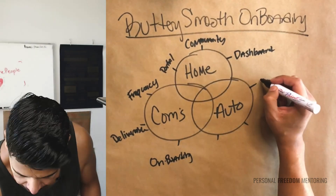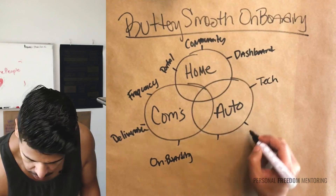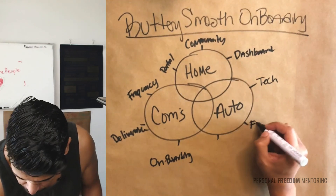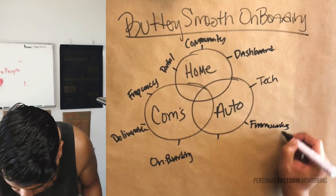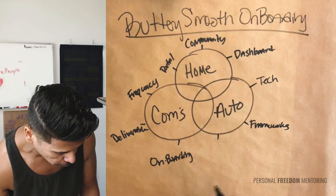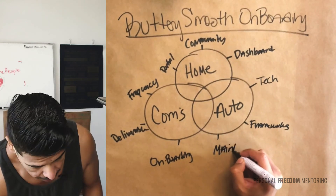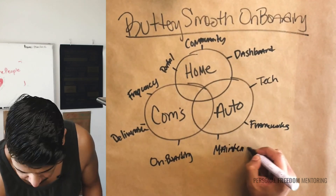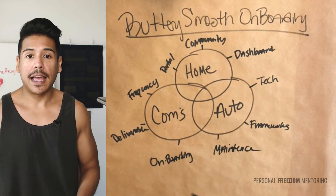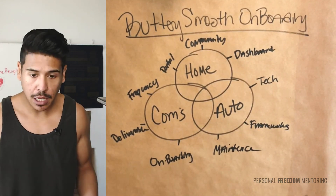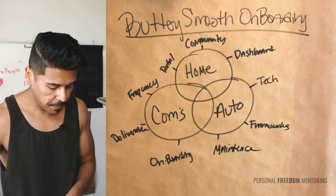Lastly, in automation, there's going to be some technology to bring your program to life. You're going to have some frameworks — you've got to draw some stuff out on paper before you really bring it to life. And then lastly you have the maintenance of it, actually keeping it running and working.